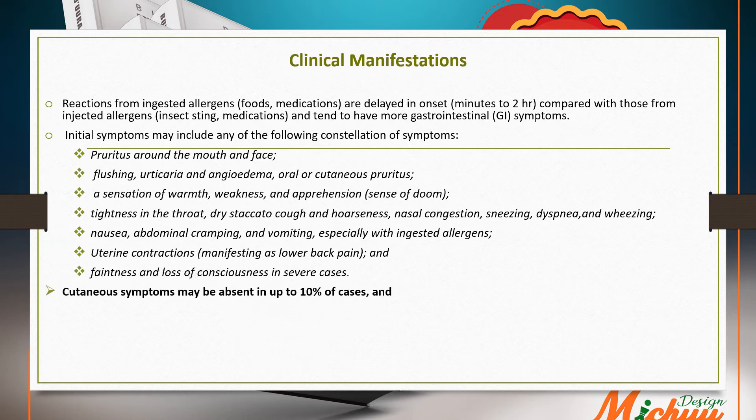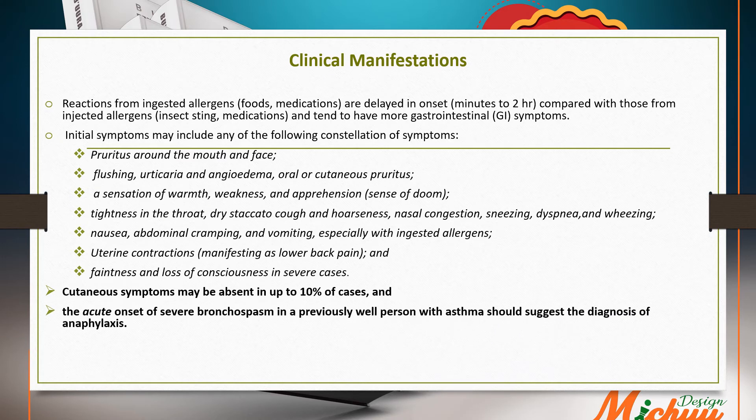Additional symptoms include nausea, abdominal cramping, vomiting especially with ingested allergens, uterine contractions manifested as lower back pain, faintness, and loss of consciousness in severe cases. Notably, cutaneous symptoms may be absent in about 10 percent of cases, so absence of skin findings does not exclude anaphylaxis. Acute onset of severe bronchospasm in a previously well person with asthma should suggest the diagnosis of anaphylaxis.